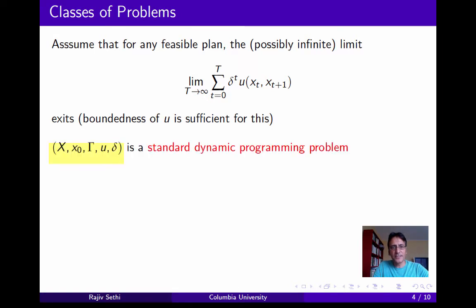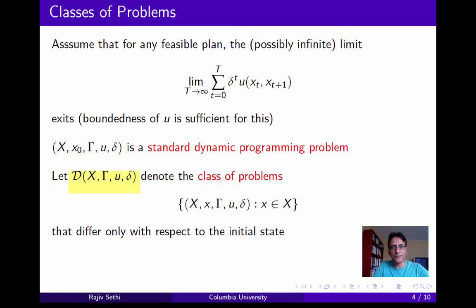The 5-tuple consisting of the metric space x, the initial state x0, the transition correspondence gamma, the one-period return function u, and the discount factor delta is referred to as a standard dynamic programming problem. It's useful to define a class of problems D, given x, gamma, u, and delta, that differ only with respect to the initial state. Note that if you follow a feasible plan, then in every period t you face a problem that belongs to the same class as in every other period.